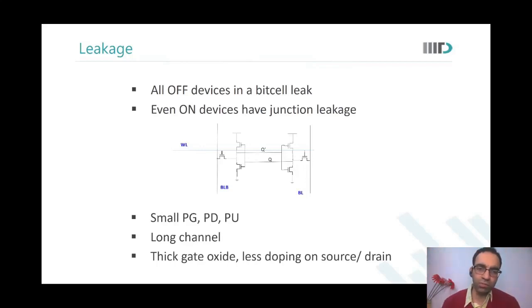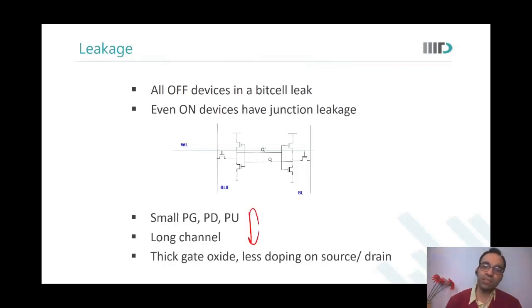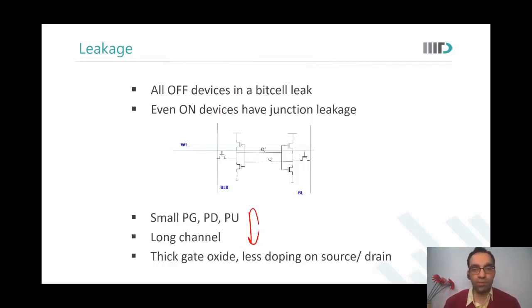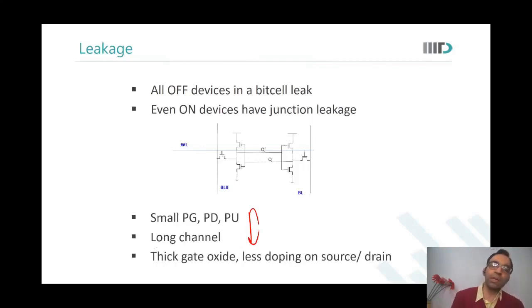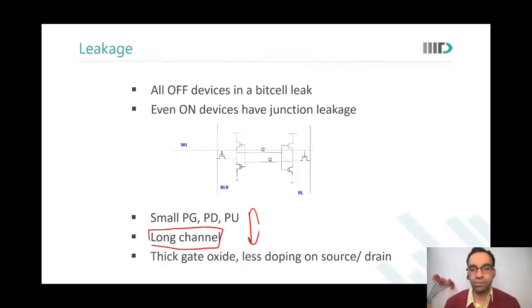Not all of these can be done simultaneously, but these are the set of constraints on the sizing. If you keep the devices small, the leakage would also be small, and area would also be less. We will not keep minimum length in our devices — we will use long channels, meaning length greater than the minimum length of a technology.